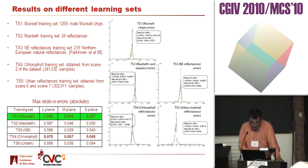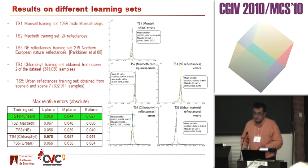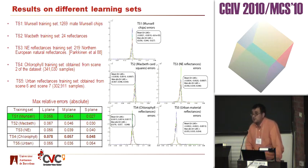In the end, the chlorophyll-based training set was the best, because the picture contained a lot of chlorophyll. But the Munsell was surprisingly very good — surprising because it's a generalist method; we don't make any assumptions about the pictures. The Macbeth was very bad, and the Northern European wasn't as good as we expected, probably because there was a bias towards flowers and colorful objects.